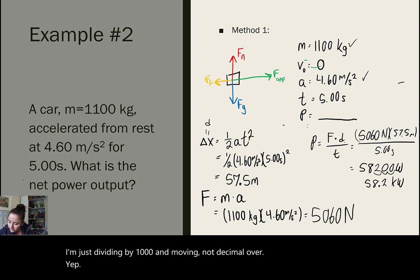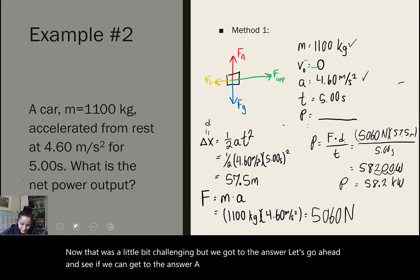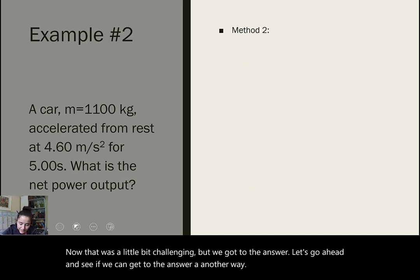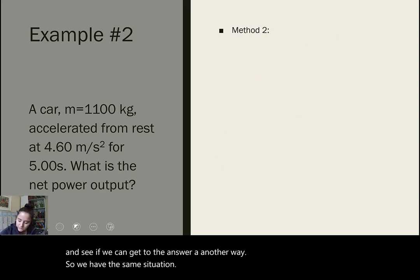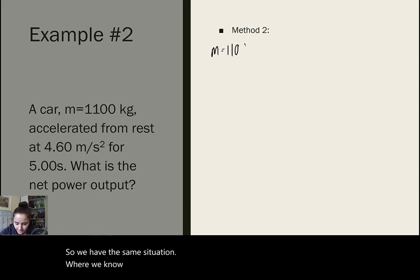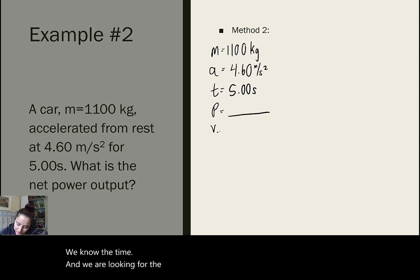Now, that was a little bit challenging, but we got to the answer. Let's go ahead and see if we can get to the answer another way. So, we have the same situation where we know the mass of the car, we know the acceleration, we know the time, and we are looking for the power. And we also know that the initial velocity is zero.